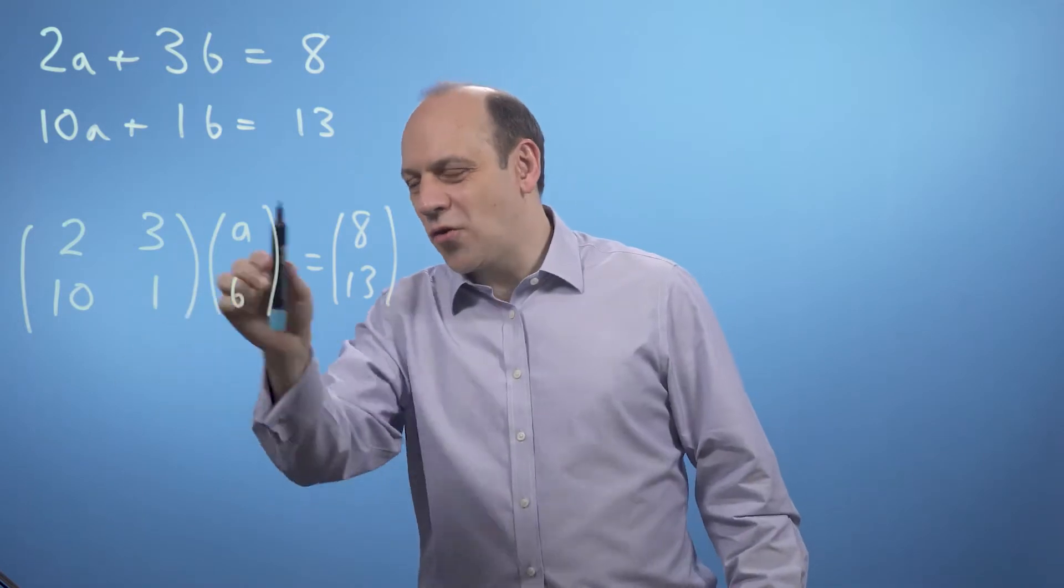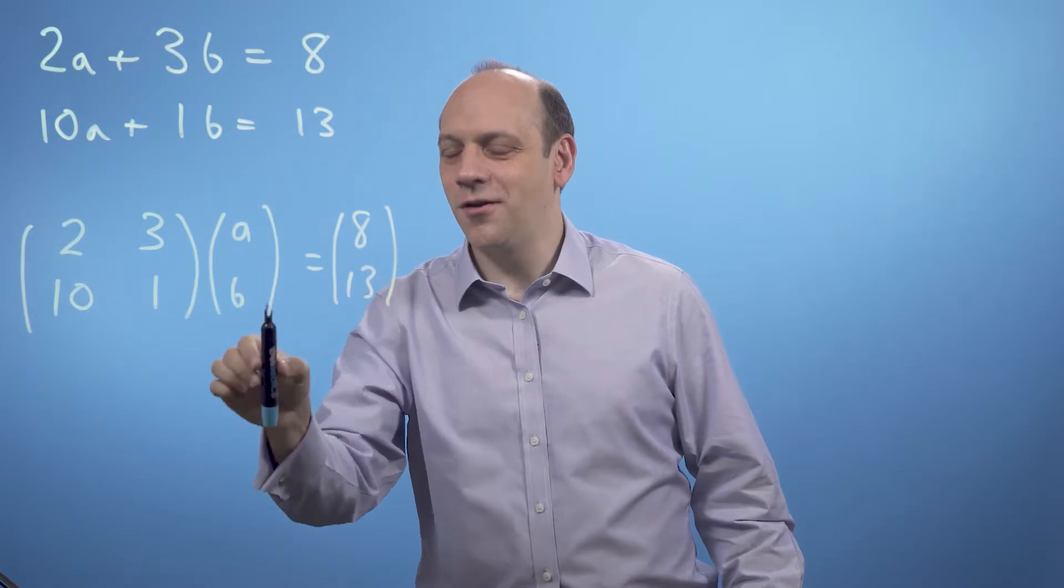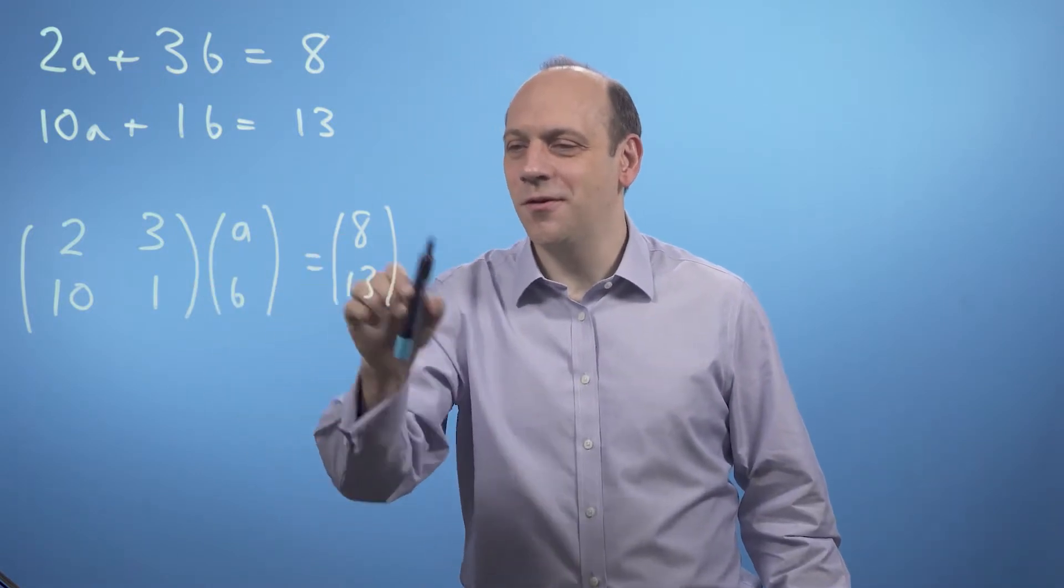And these things I call matrices. This is a 2 by 2 matrix. This is a 2 row by 1 column matrix. And this is another 2 row by 1 column matrix.